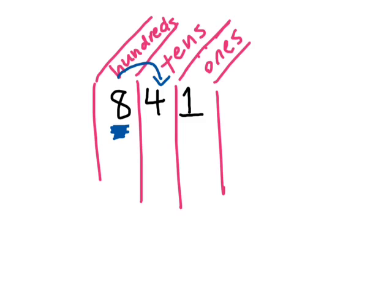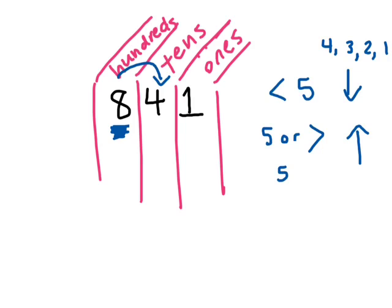So if the number is less than five, we round down. The number stays the same. If the number is five or greater, we round up. So anything less than five would be four, three, two, one. And anything five or greater would be five, six, seven, eight, nine. And I also forgot zero, right? Zero is less than five also.